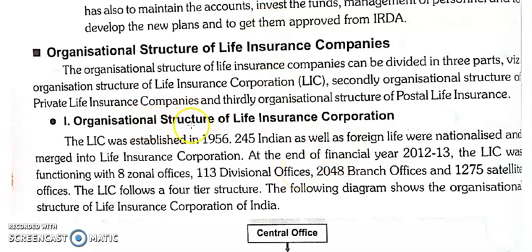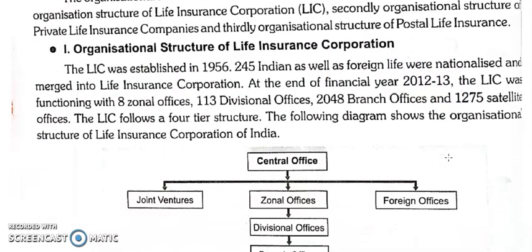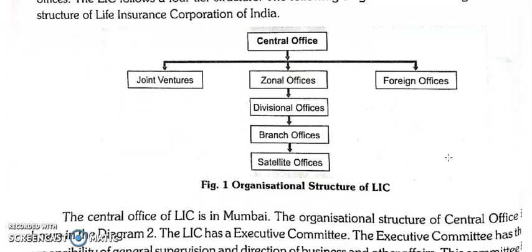First, the organizational structure of Life Insurance Corporation. LIC was established in 1956, when 245 Indian and foreign life insurers were nationalized and merged into one firm named LIC. The data given in the book is up to 2012–13, but it has increased many folds nowadays, so you can check the recent updates.